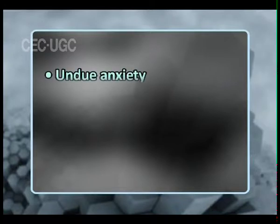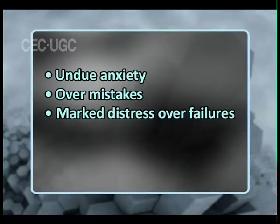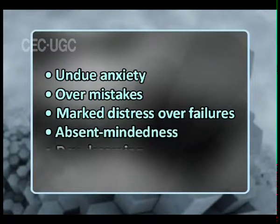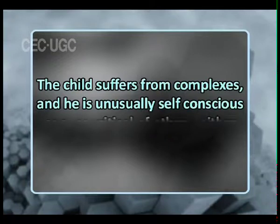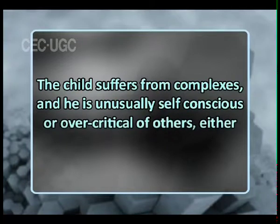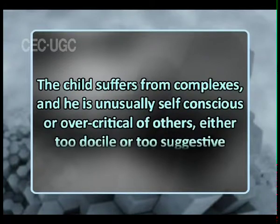Number two: the maladjusted child shows undue anxiety over mistakes, marked distress over failures, absentmindedness, or daydreaming. Number three: the child suffers from complexes and is unusually self-conscious or overcritical of others, and is either too docile or too suggestive.